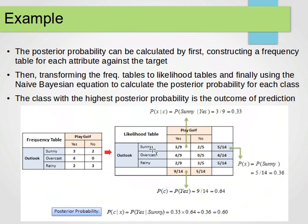Looking at the outlook attribute, we have the frequency table and the derived probabilities. Probability of X given C is extracted as follows: probability of sunny given yes is 3 over 9 or 0.33; probability of sunny given no is 2 over 5. The probability of just sunny regardless of class is 5 over 14; probability of overcast is 4 over 14, and so on for rainy. At the bottom, probability of yes and probability of no sum to 9 and 5 respectively — the number of yeses and the number of nos.